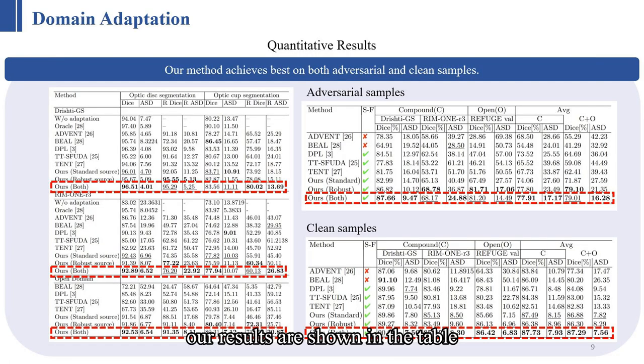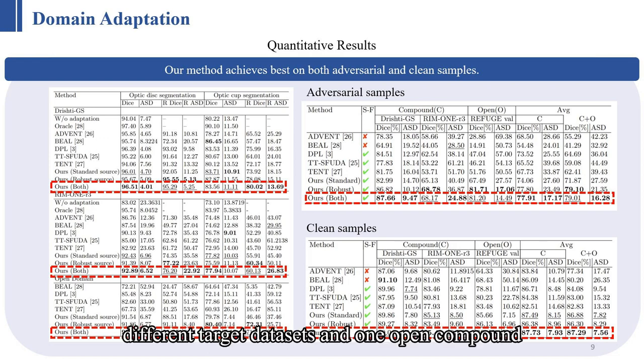Our results, as shown in the table, were compared against other state-of-the-art domain adaptation methods on the target domain dataset. The table displays the outcomes of two different target datasets and one open compound. This term 'both' signifies the combined use of both robust and standard source models.